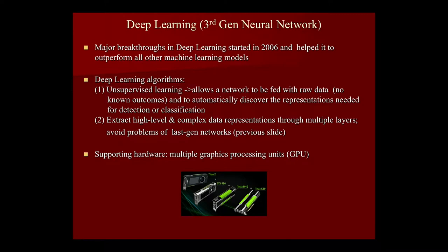Starting in 2006, there was a major breakthrough in deep learning that helped it outperform all other machine learning methods — that's when deep learning really took off. In the deep learning algorithm, there is a special feature of unsupervised learning. This allows the network to be fed raw data without knowing the outcome, and the network will automatically discover the representations needed for detection or classification.